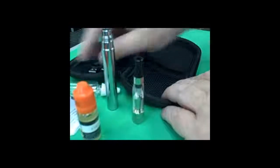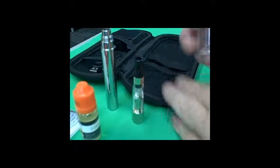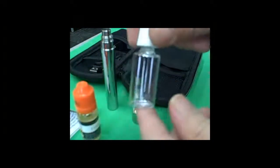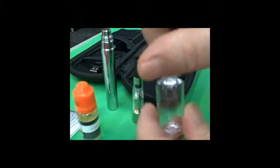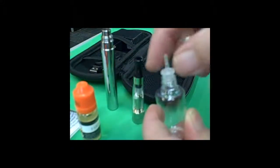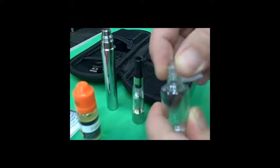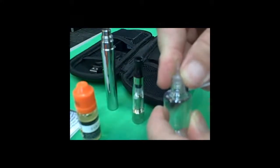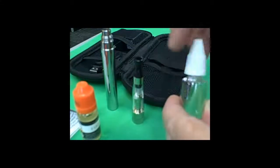You have a squeeze bottle. This is for when some of the juices you get come with a blunt tip, so this bottle is included. You'll notice it has a nice pointed tip. It makes it easy when you go to fill your atomizer.